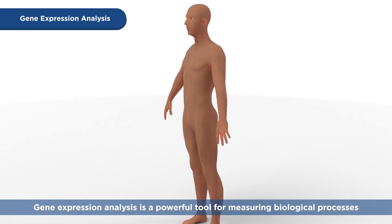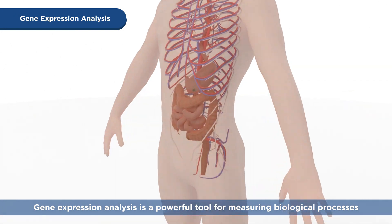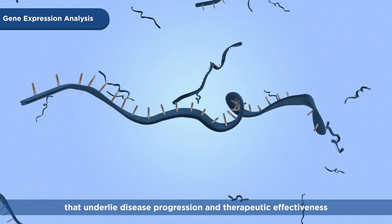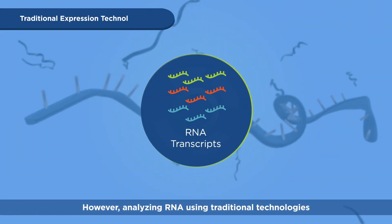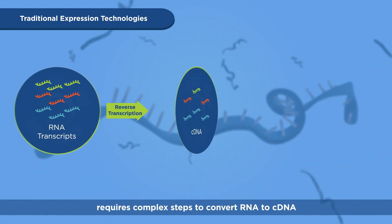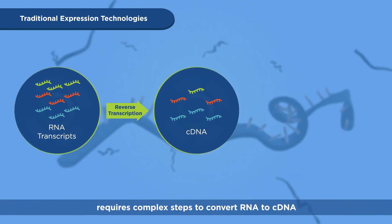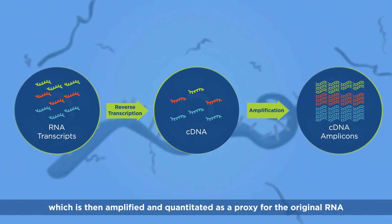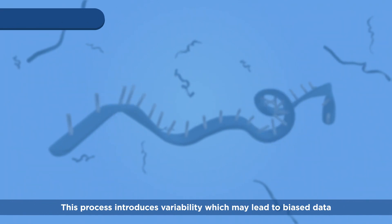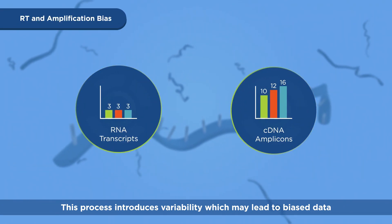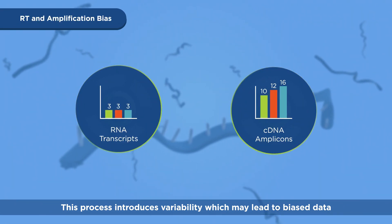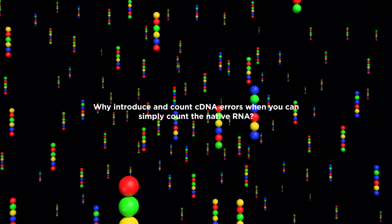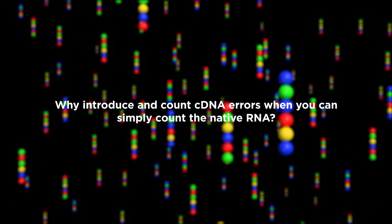Gene expression analysis is a powerful tool for measuring biological processes that underlie disease progression and therapeutic effectiveness. However, analyzing RNA using traditional technologies requires complex steps to convert RNA to cDNA, which is then amplified and quantitated as a proxy for the original RNA. This process introduces variability, which may lead to biased data and an inability to replicate results. Why introduce and count cDNA errors when you can simply count the native RNA?